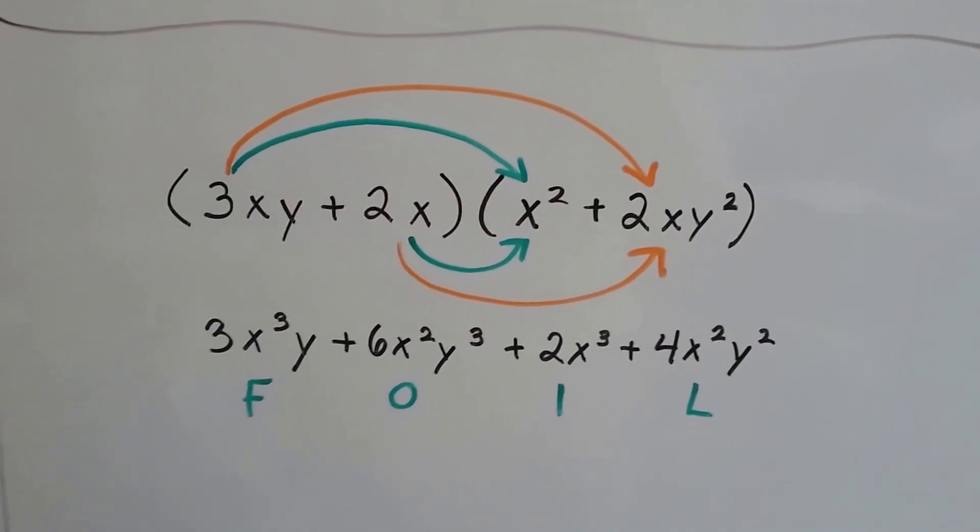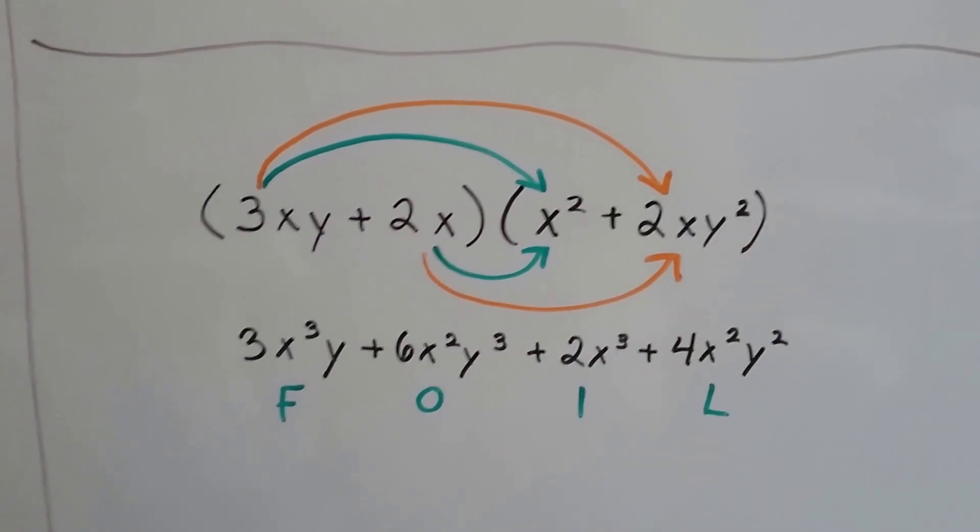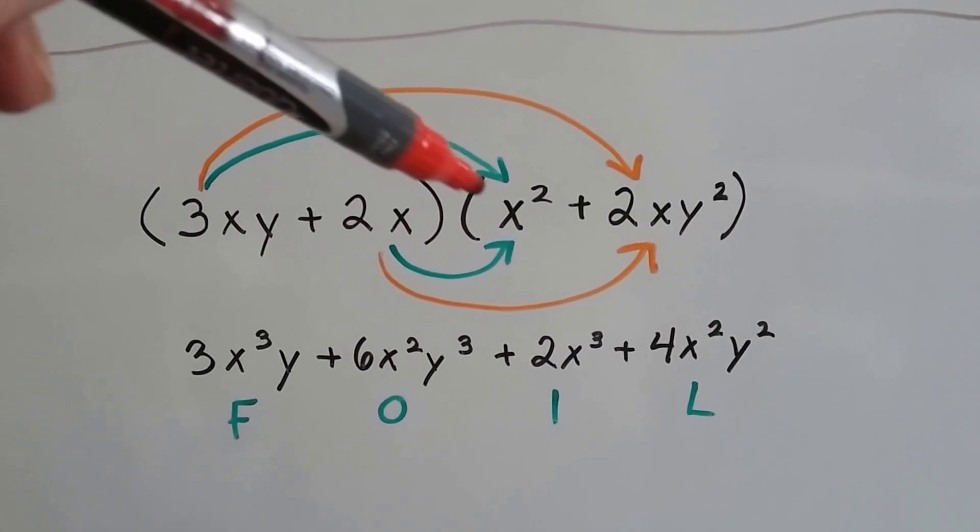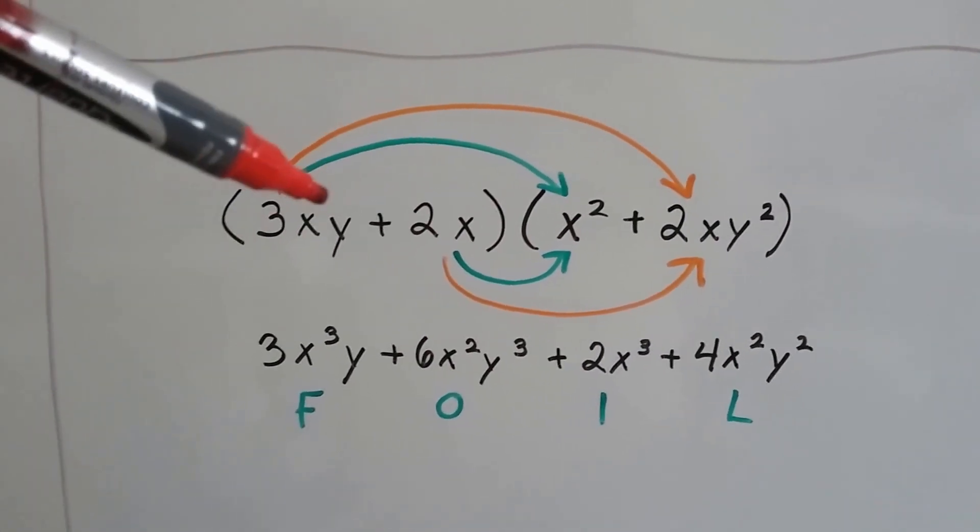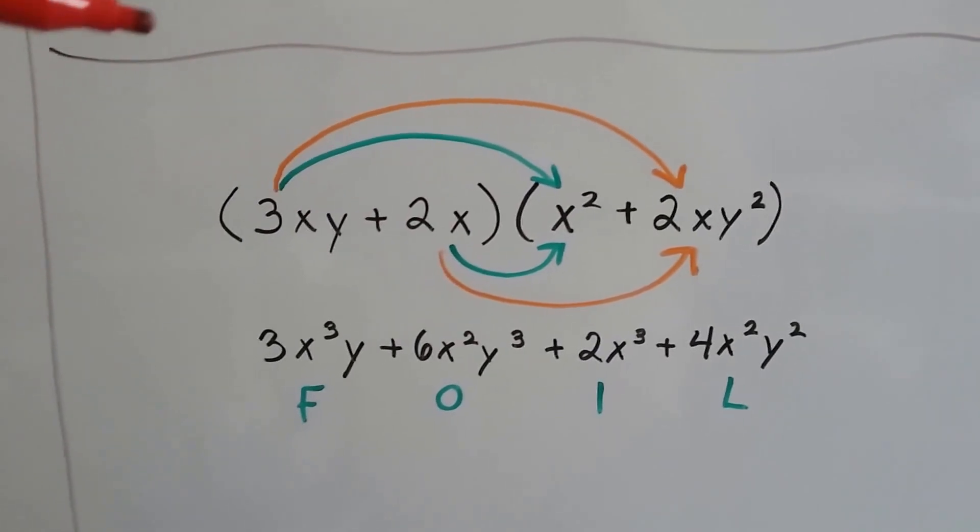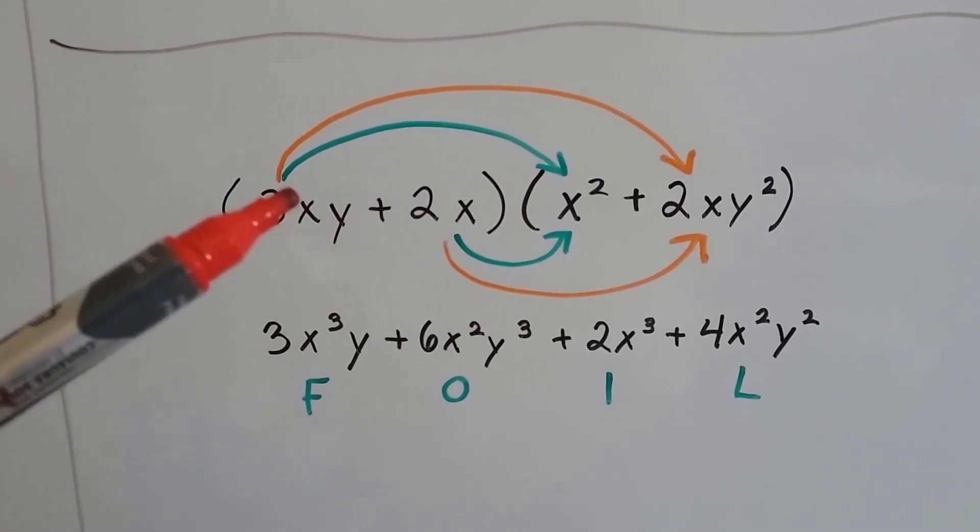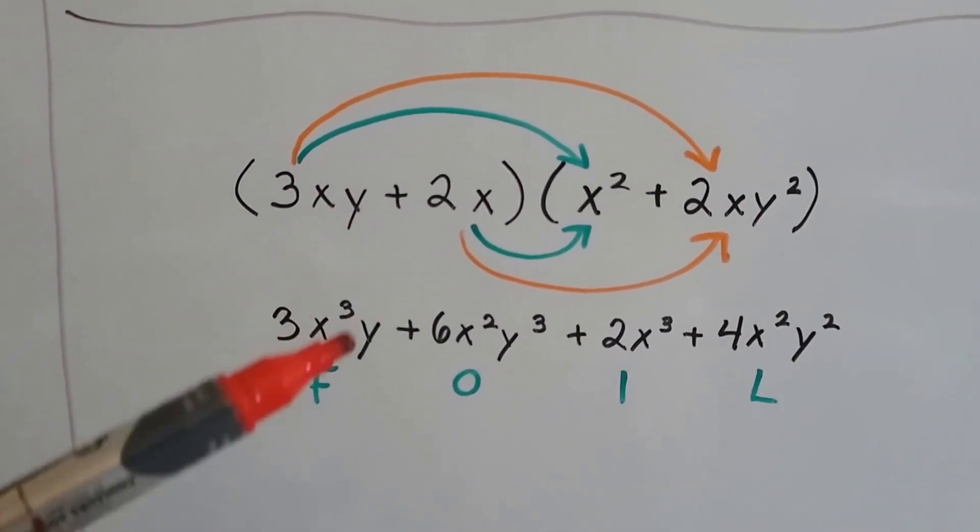So take a look at this. We have two binomials. We have 3xy plus 2x times x squared plus 2xy squared. We're going to start by doing 3xy times the x squared. And remember we have to add the exponents. So there's a little one here and a little one here. That's going to give us 3x to the third, because that one and that two makes three for the x. And there's a y.